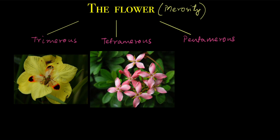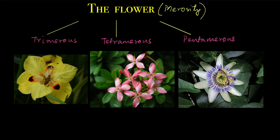Similarly, in tetramerous flowers the parts of the different whorls are either four or multiples of four — like in these flowers, there are four petals. In pentamerous flowers, as you must have guessed, the number is five or a multiple of five. In this case the number of petals is ten. So this is another way of classifying flowers.